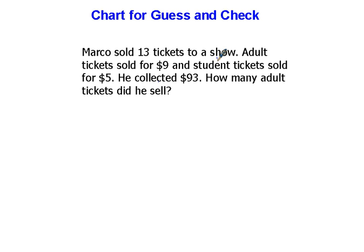Marco sold 13 tickets to a show. This gives us our first clue here, 13 tickets to a show. Adult tickets sold for $9, so we have adult tickets, $9, and student tickets sold for $5. Different kinds of tickets there. We have two different kinds of tickets, and then he collected $93. We've got a lot of different clues going on here. How many adult tickets did he sell?